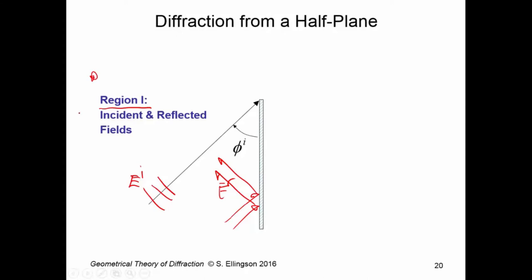So out here, in these points that I'm drawing as dots, we have the sum of an incident field and a reflected field. Now, at some point, we hit what we refer to as a reflection shadow boundary, RSB. And it's this dashed line here. In other words, on this side of the dashed line, we have a reflected field. But on the other side of the dashed line, we have no reflected field. So there's a discontinuity, and on this side, which we'll call region 2, we have only incident fields.